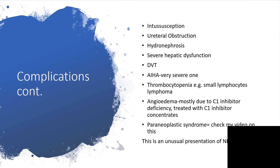Further complications include ureteric obstruction leading to hydronephrosis, severe hepatic dysfunction detectable on liver function tests, venous thrombosis that could lead to pulmonary embolism, autoimmune hemolytic anemia, thrombocytopenia with small lymphocytic lymphoma, angioedema mostly due to C1 inhibitor deficiency treated with C1 inhibitor concentrates, and paraneoplastic syndrome. These are unusual but possible presentations of non-Hodgkin lymphoma.